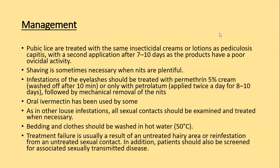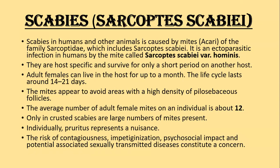Now the second disease to discuss is scabies, caused by Sarcoptes scabiei. Human scabies is caused by a mite, also known as an acarian, of the family Sarcoptidae. Its name is Sarcoptes scabiei, and it is an ectoparasite — specifically Sarcoptes scabiei var. hominis. This mite only infests humans; they are host-specific and survive only for a short period on another host.